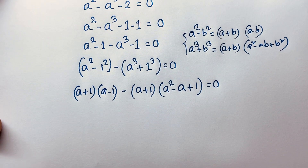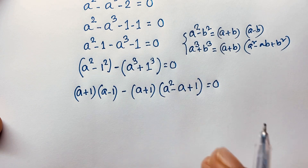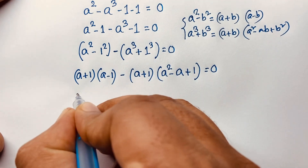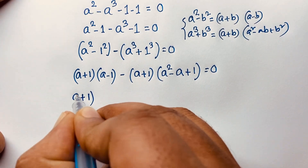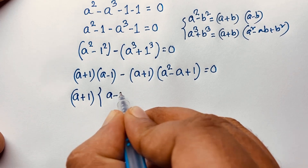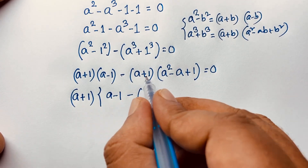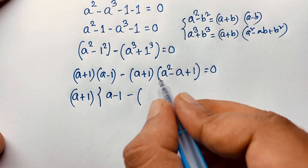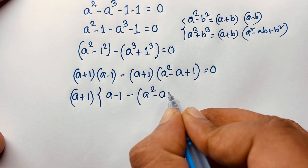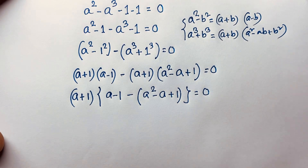Now I can see that (a + 1) is a common factor in both terms. Taking (a + 1) as common, and dividing through, we get (a + 1) times [(a − 1) minus (a squared minus a + 1)] is equal to 0.